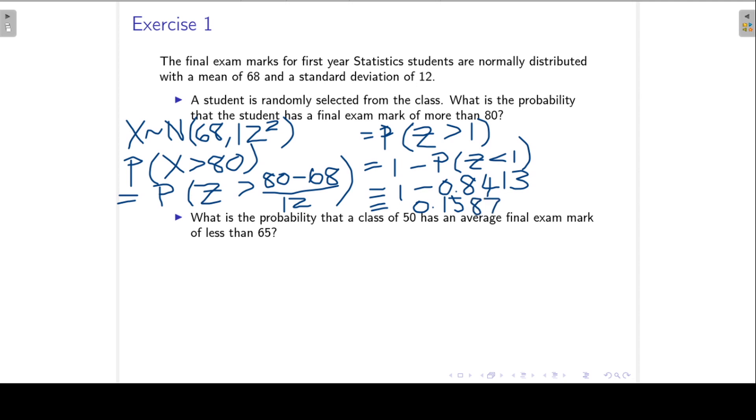Now the next part. What is the probability that a class of 50 has an average final exam mark of less than 65? It's important that you see the difference here. We are no longer working with a single student, but with the average mark for a class of 50.